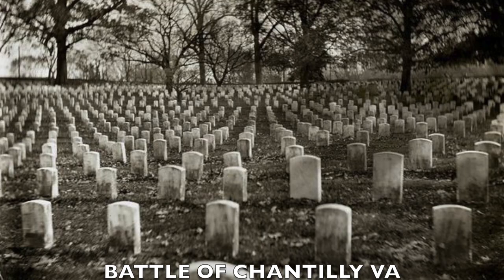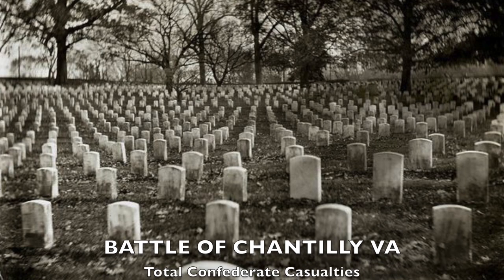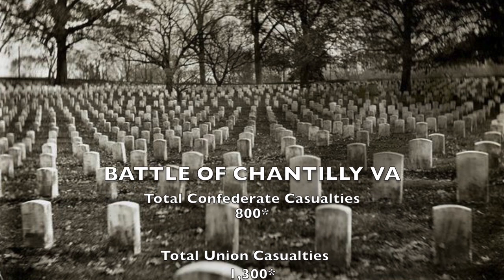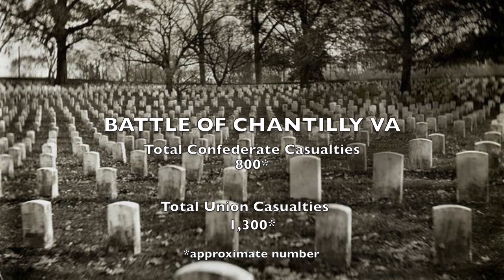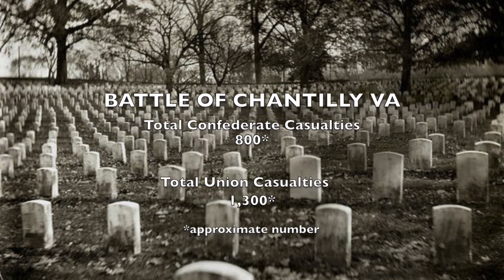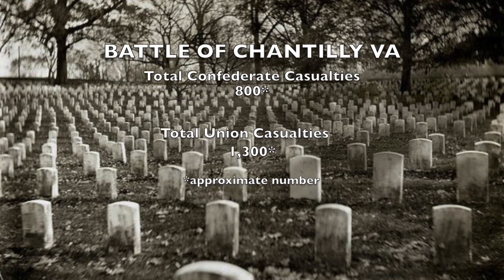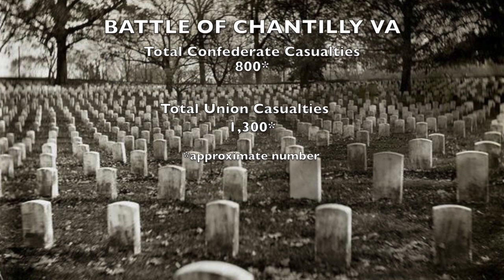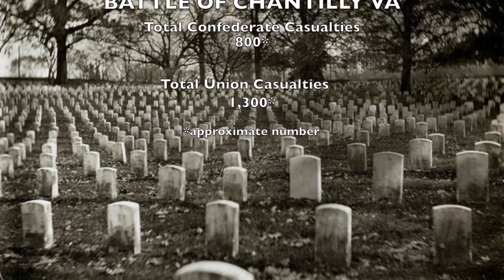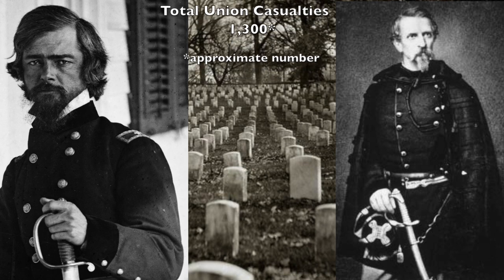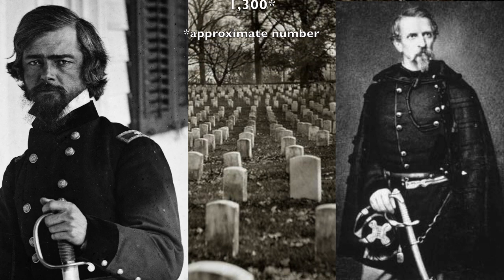The casualties for the Confederates were relatively light, with only 800 men killed, wounded, or missing. Meanwhile, the Union suffered a larger setback with the loss of 1,300 men killed, wounded, or missing. But the biggest loss to the Union was two Union commanders: Isaac Stevens and Philip Kearney.